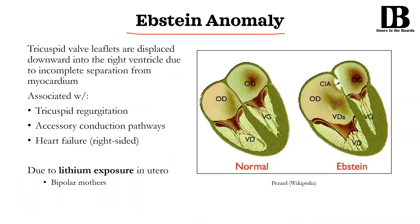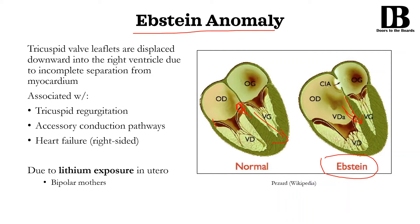Next up we have Ebstein anomaly. Normally what happens with the tricuspid valve is that as the heart is growing in this direction, the tricuspid valve, instead of being dragged along with it, actually separates itself in order to stay at its location. When it fails to separate at this point — if it remains attached — it can actually grow downward along with the heart, and therefore gets displaced downward. You can notice that as soon as it gets displaced downward, defined as Ebstein anomaly, the right ventricle is very small and therefore is not really working as well as it should.